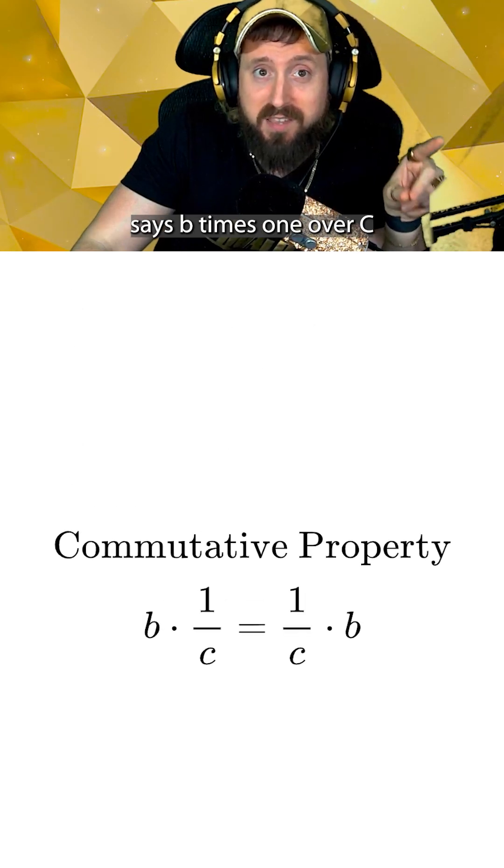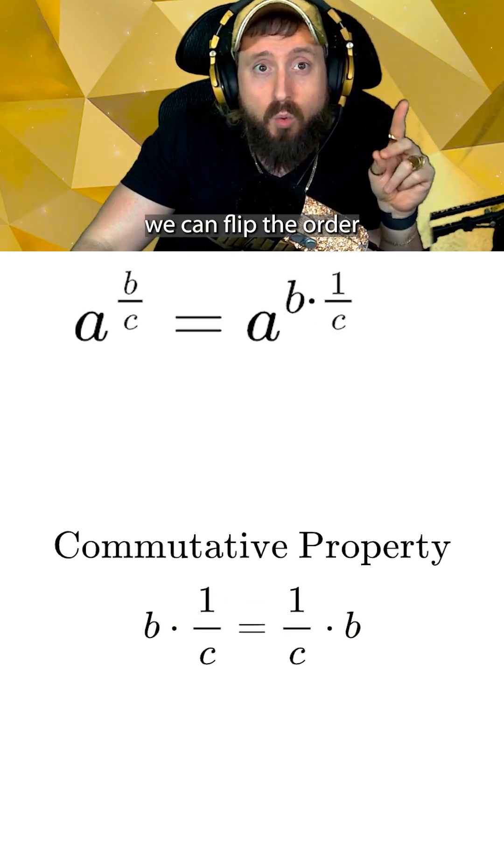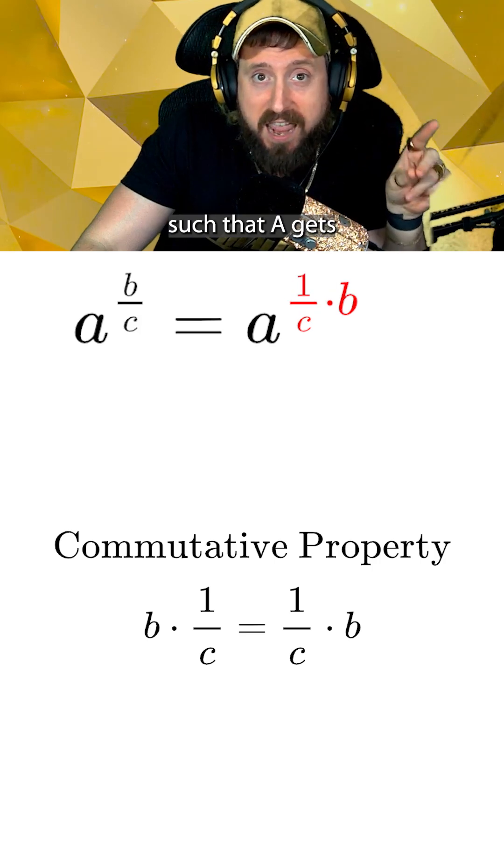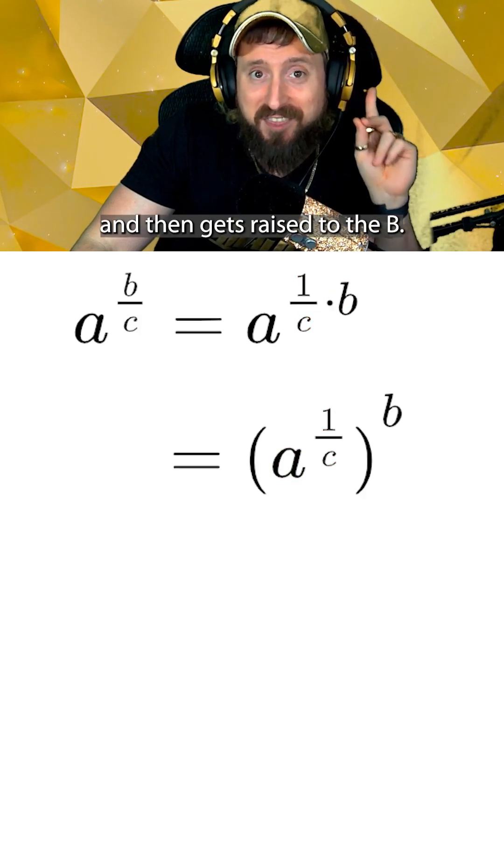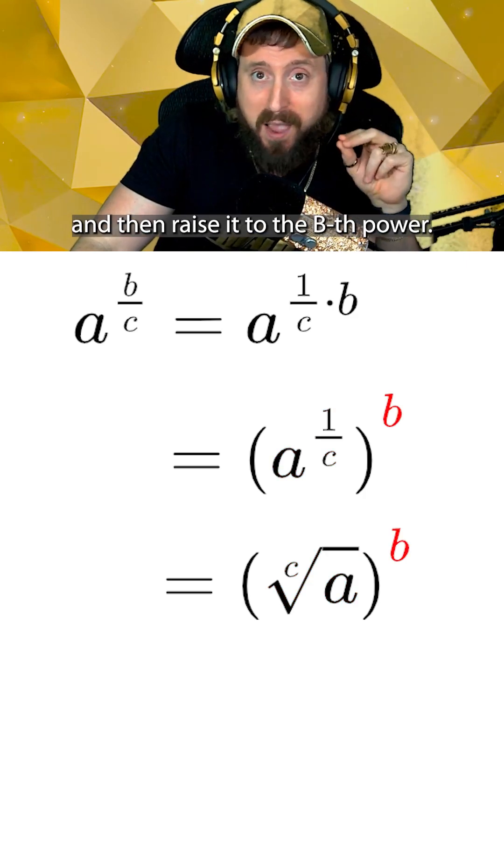However, since the commutative property says b times 1 over c is the same thing as 1 over c times b, we can flip the order such that a gets raised to the 1 over c and then gets raised to the b. This means we do the cth root first and then raise it to the bth power.